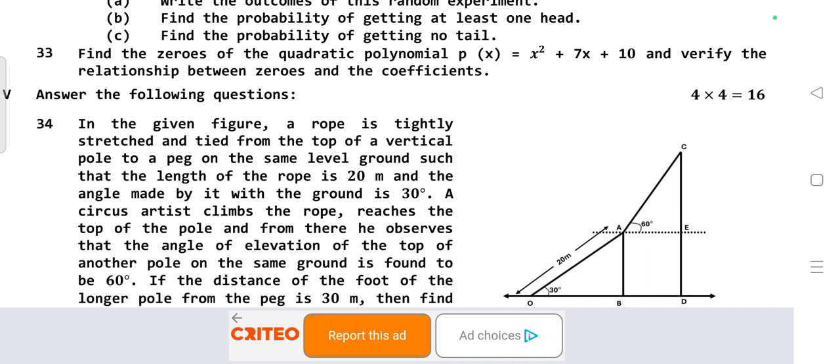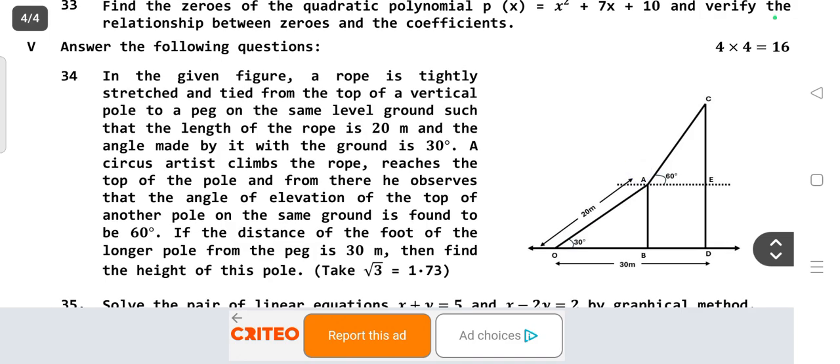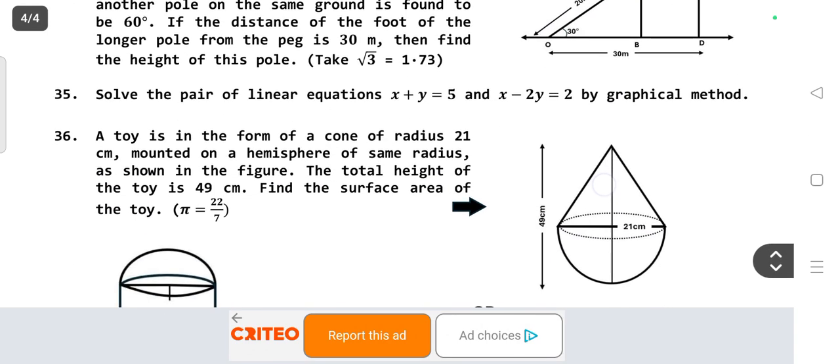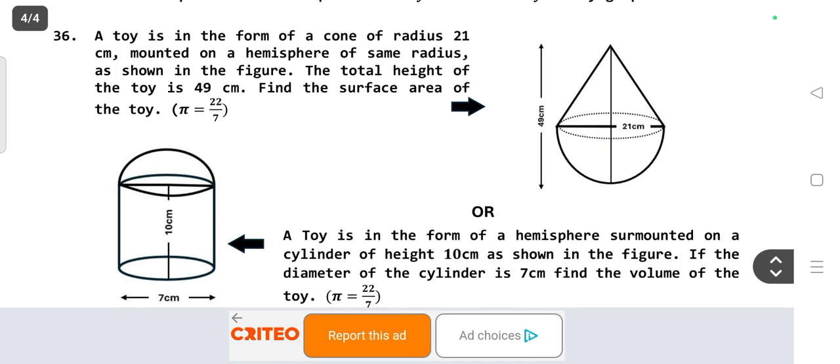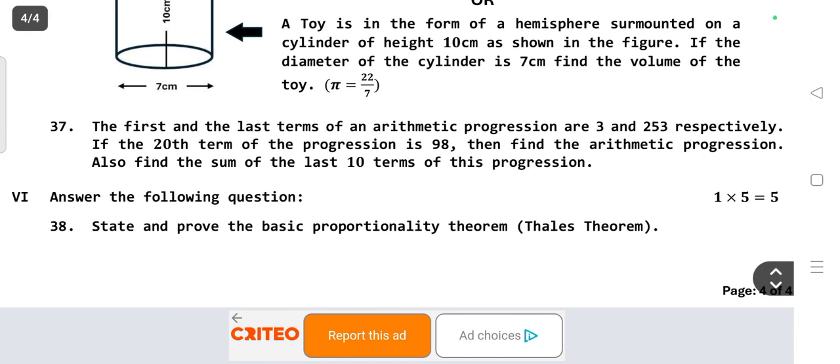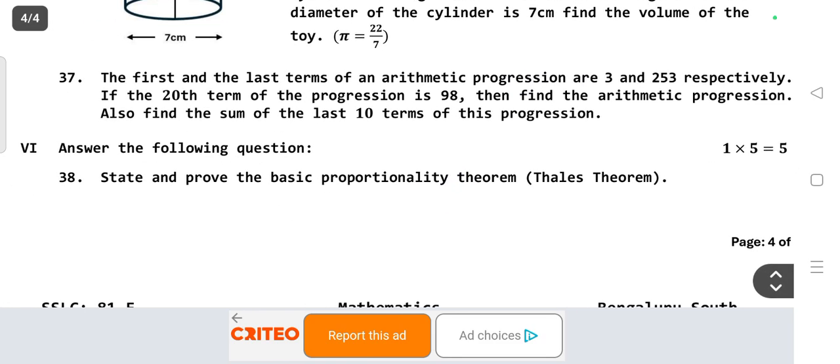Next, four mark questions, four questions, each carries four marks. This is from the Trigonometry chapter, question 34. Question 35: Solve the pair of linear equations by graphical method. Question 36 is from the Mensuration chapter, OR option is also given. Question 37 is from Arithmetic Progression. Last but not least, answer the following for five marks: Prove the basic proportionality theorem.